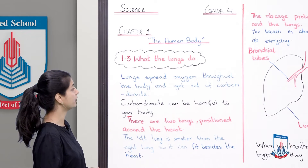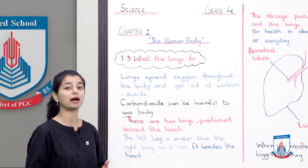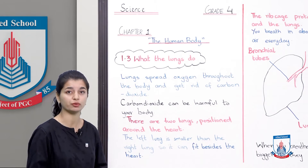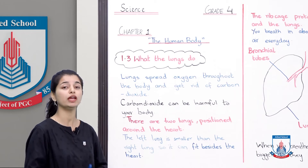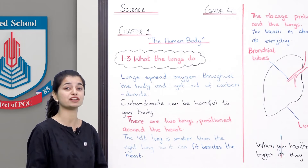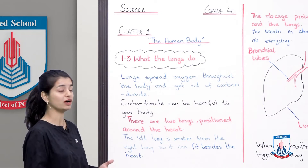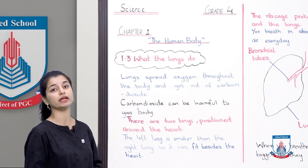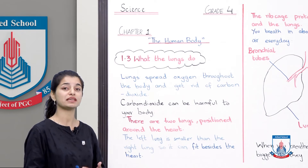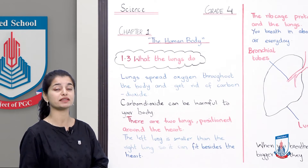What do the lungs do? Lungs spread oxygen throughout the body and get rid of carbon dioxide. This is their basic function — they take oxygen into your body. Oxygen is needed for every process and energy production. And the carbon dioxide produced in our body — the waste material — is removed by the lungs. Carbon dioxide can be harmful to your body; if it builds up too much, it can cause damage. So the lungs bring oxygen in and remove the waste material, carbon dioxide, out.